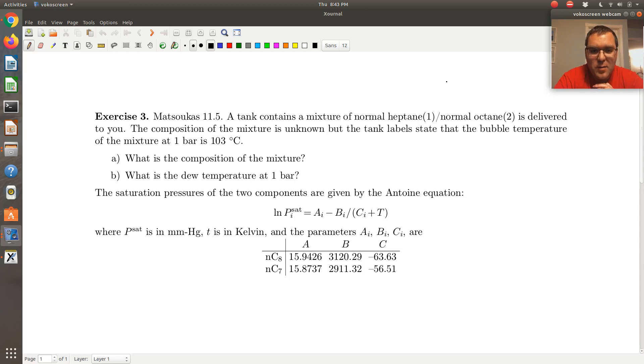So we have a tank that contains a mixture of normal heptane and normal octane. The composition of the mixture is unknown, but the tank label states that the bubble temperature of the mixture at one bar is 103 degrees C. So I have a mixture of heptane C7 and octane C8. Assuming that forms an ideal solution, what's the composition of the mixture, and what is the dew temperature at one bar? Saturation pressure of the two components is given by the Antoine equation below, where P^sat's in millimeters of mercury, T's in kelvin, and the parameters are provided below.